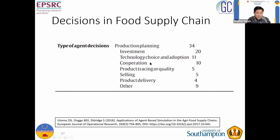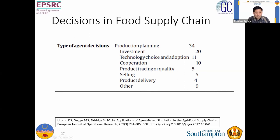A real-world example from food supply chain papers: typical behaviors people model include production planning — such as crop mix (what proportion of land to plant with corn, rice, etc.), scheduling about when to plant, and investment decisions. Technology choice and adoption refers to whether a farmer will adopt certain technology or new procedures. Cooperation decisions — whether to cooperate or not — are also typical. These are examples of decisions that farmers have to make in a food supply chain model.